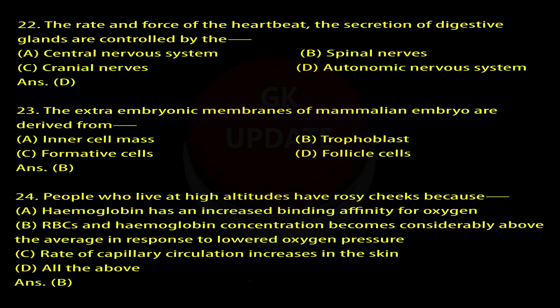Question 23: The extra-embryonic membranes of mammalian embryo are derived from — A. Inner cell mass, B. Trophoblast, C. Formative cells, D. Follicle cells. Answer: B.